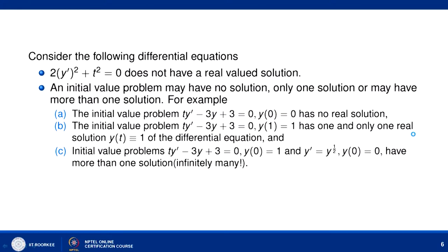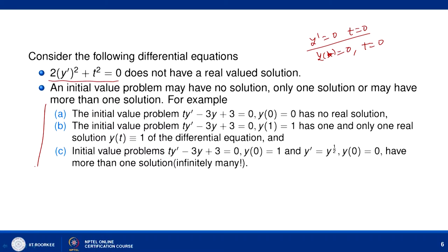Consider the equation 2(y')² + t² = 0. This can only be satisfied when y' = 0 and t = 0 simultaneously, so this differential equation has no real-valued solution in general. This illustrates that a differential equation may have no real solution at all. Furthermore, depending on the initial condition, an initial value problem may have no solution, exactly one solution, or more than one solution.